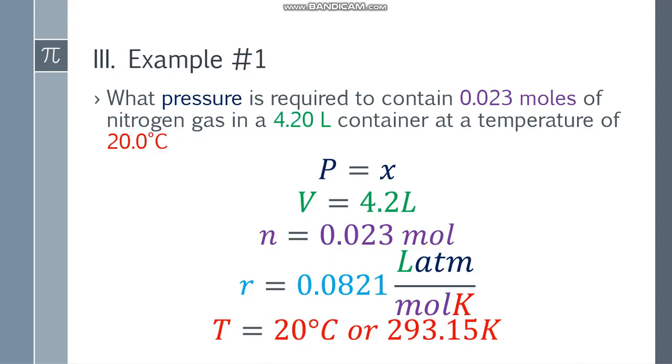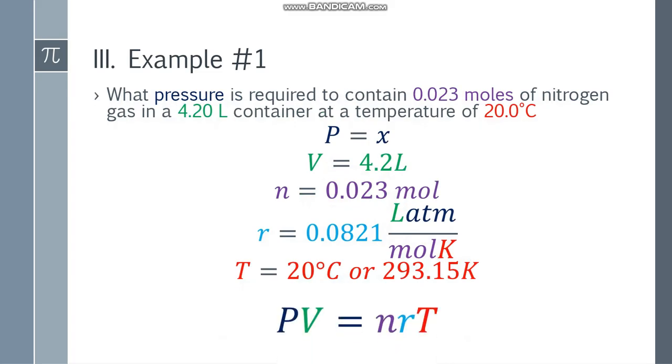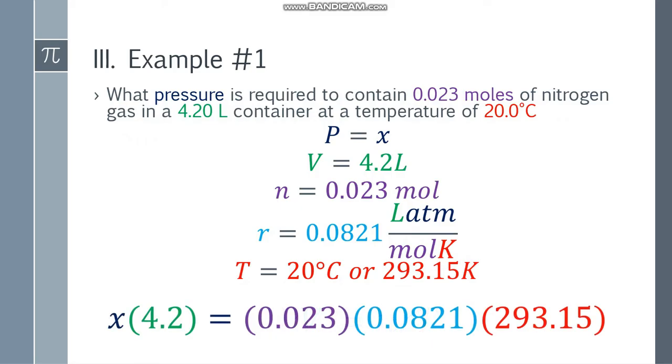At ang r, as is palagi, 0.0821 at itong unit. Liters times atm over mol times Kelvin. At ang temperature, that will be 20 degrees Celsius. Kailangan mo munang i-convert yung 20 degrees Celsius to Kelvin, so mag-add ka lang ng 273.15. Magiging 293.15 Kelvin. Dahil okay na, we have liters here and Kelvin here, at hindi naman natin alam yung pressure, x lang siya.